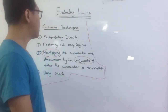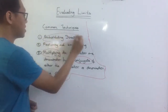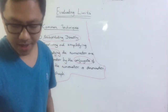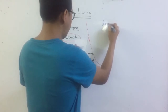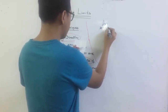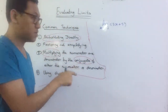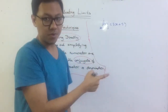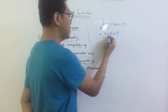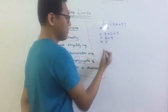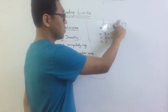Evaluating limits - we have four common techniques. The first one is substituting directly. Let me explain with one example: limit as x approaches 2 of 3x plus 5. So as it is, you just substitute the number into the expression. I'm going to substitute here: 3 times 2 plus 5, which is 6 plus 5, equal to 11.